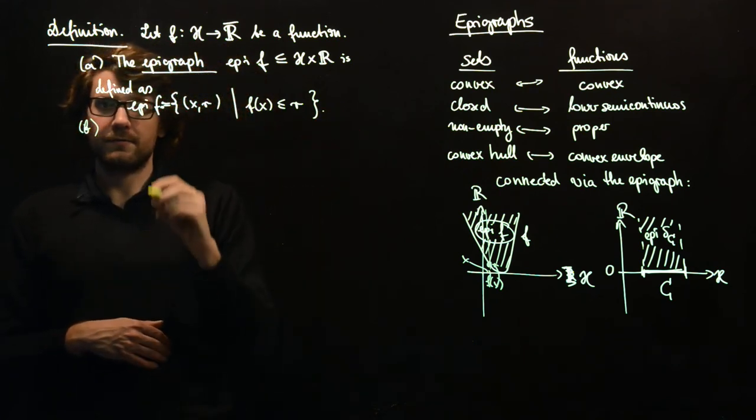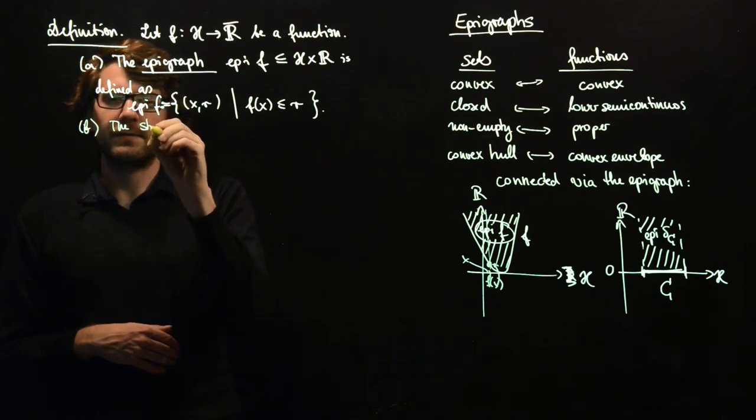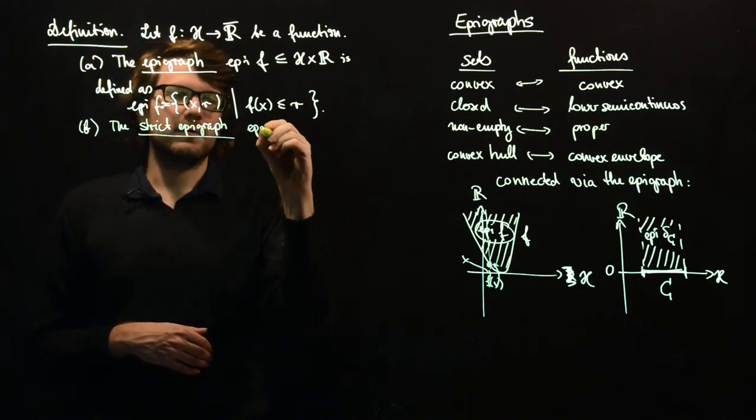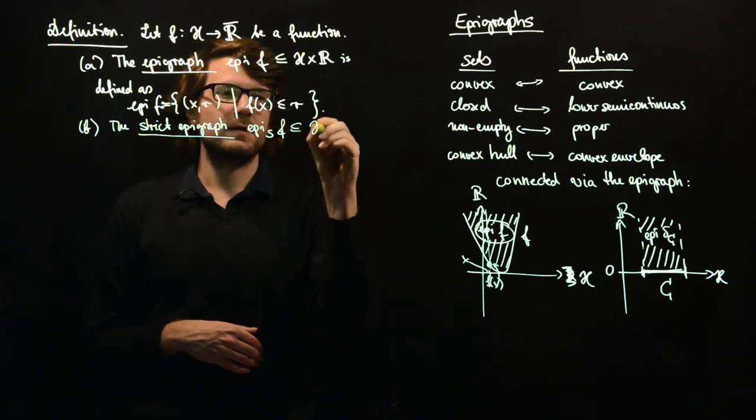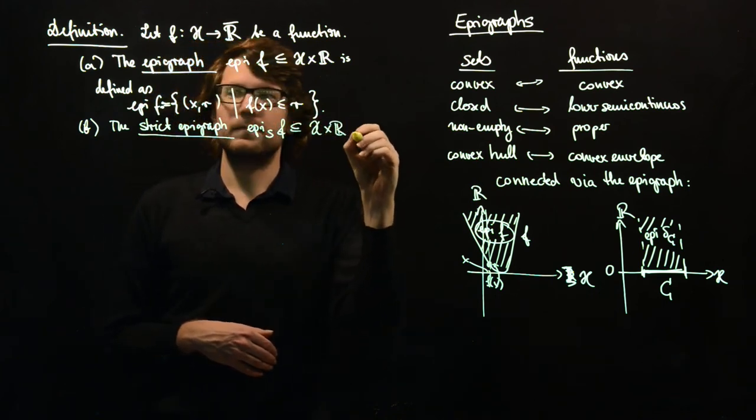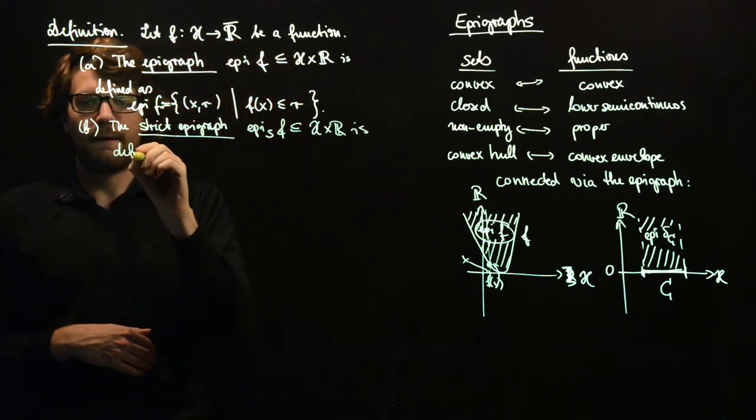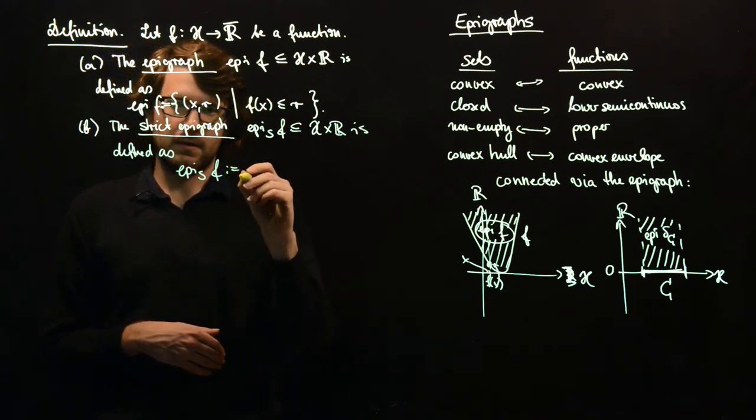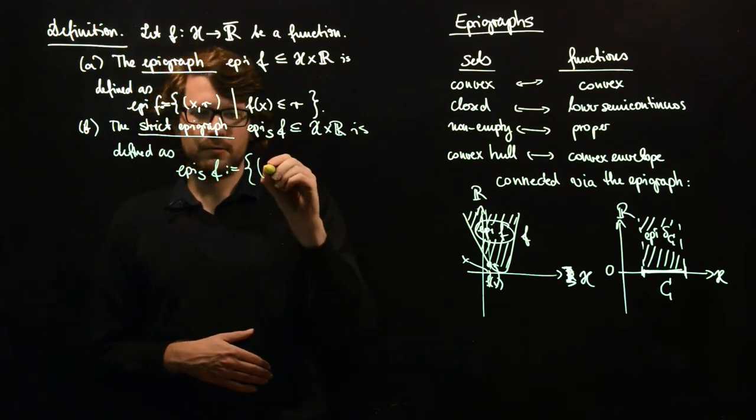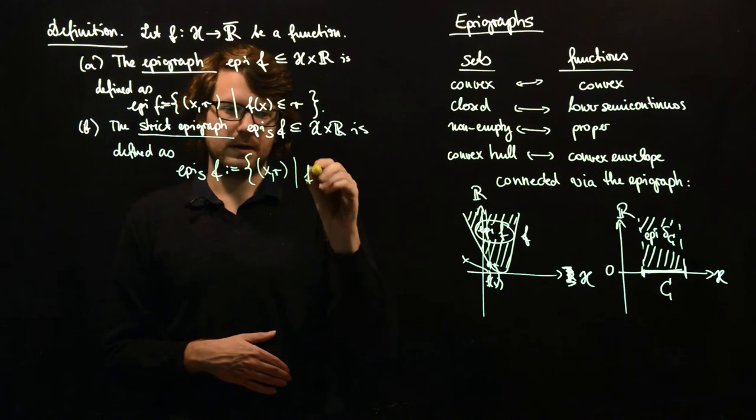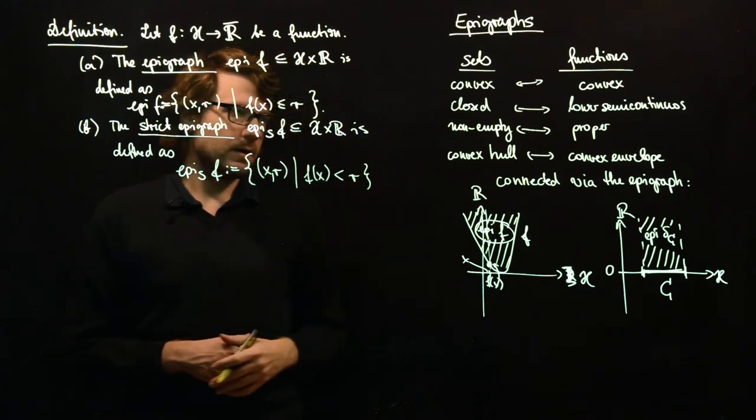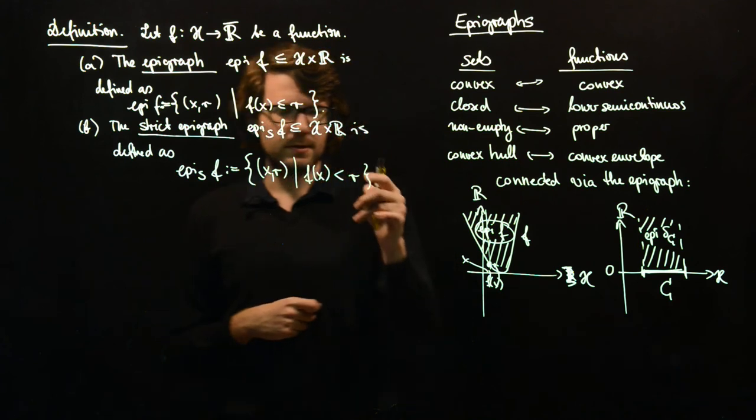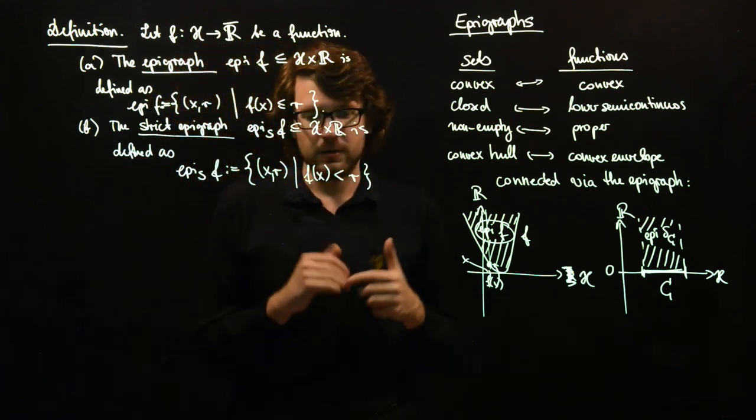And then it's oftentimes convenient to also have the notion of the strict epigraph. So the strict epigraph. And we call this epi s of f. It's also an element of H times R is defined as, and now we have epi s of f. And here we have pairs x and r such that f of x is strictly less than r.